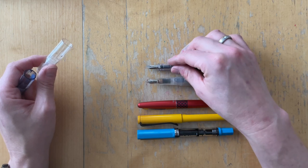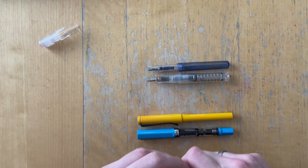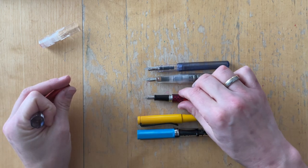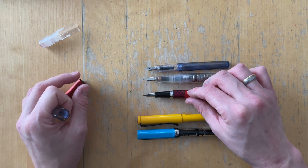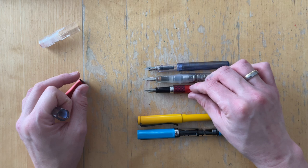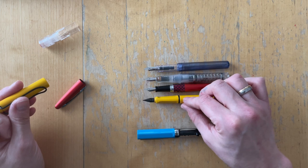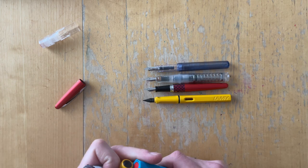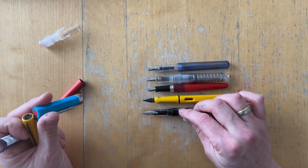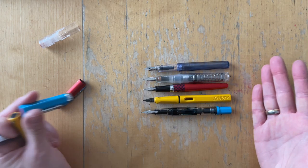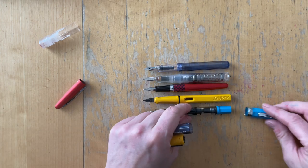I'm going to line them up at the section where the nib comes out of the section because that's where you basically hold them. So you can see how they compare. So how much it sticks out of your hand. But actually if we look at this, they're all basically the same size uncapped.